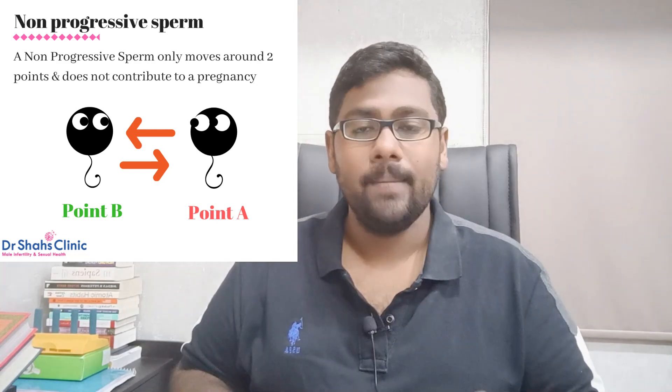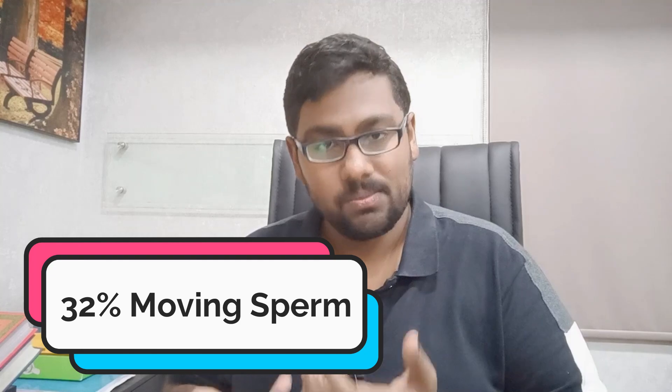What's important to understand here is that only progressive sperm contribute to the chances of a pregnancy. So the higher the number of progressively motile sperm in a man's semen, the better the chance of pregnancy, and the faster the time to pregnancy. Time to pregnancy rates are much quicker in men with 32% or more progressively motile sperm.